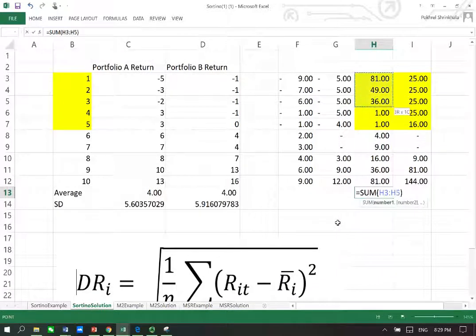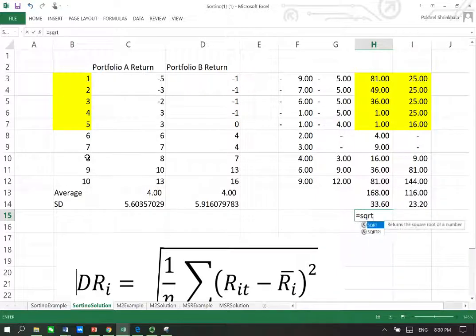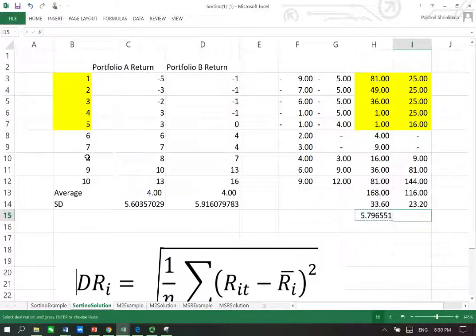I therefore need to sum them up, so I get 168 here and 116 here. Now I need to divide them by how many we had, 5 of them, so that 5 goes here. I get these numbers, and now I need to do the last thing, which is the square root of them. Therefore, I get 5.79 and 4.81. I have found my DRI or my semi-deviation, or downside risk.